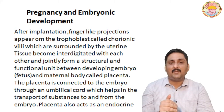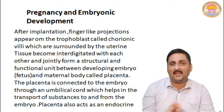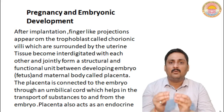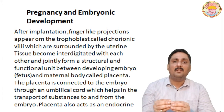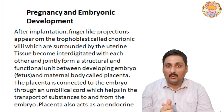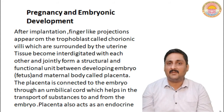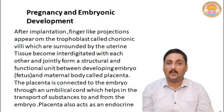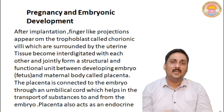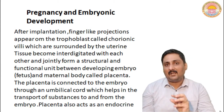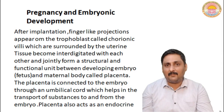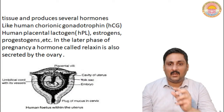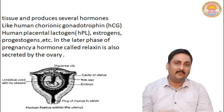Placenta is a structure which is formed out of two tissues, both maternal as well as fetal. The function of placenta is to provide food, nutrients, and oxygen from the mother's body to the fetus. Moreover, undigested substances such as carbon dioxide can be removed with the help of placenta. Placenta does not directly join with the fetus — it gets connected with the fetus through the umbilical cord, which is a structure that connects the placenta with the fetus.